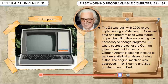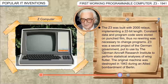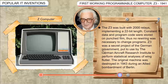Constant data and program code was stored on punched film, so no rewiring was necessary to change programs. Z3 was a secret project of the German government, put to use by the German Aircraft Research Institute to perform statistical analysis of wing flutter. The original machine was destroyed in 1943 during an elite bombardment of Berlin.